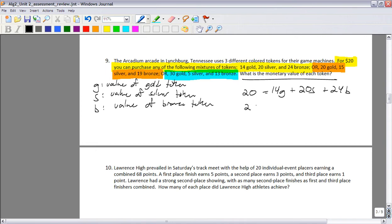So for the one in yellow, it says $20 is produced by the combination of 14 golds, which are worth G apiece, plus 20 silvers, plus 24 bronze. Here we got $20 will come from, this is the orange one, 20 gold. So 20 times G, that would be how much money 20 gold coupons, or gold tokens were worth. So 20 golds, plus 15 silvers, plus 19 bronze, or 20, is equal to 30 of the golds, plus 5 of the silvers, plus 13 of the bronze.